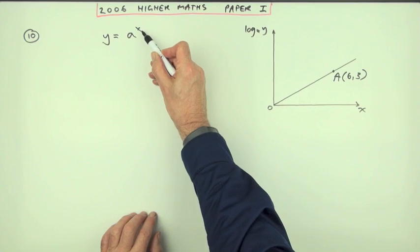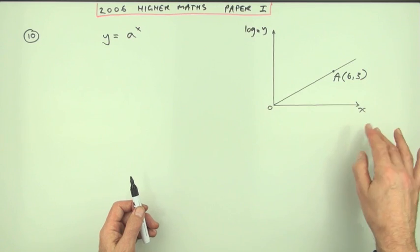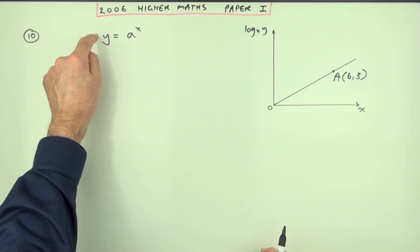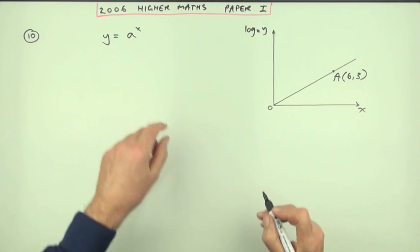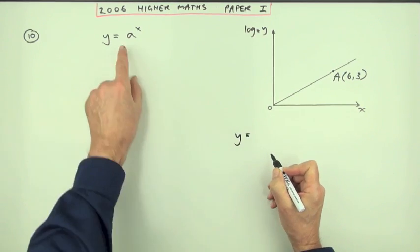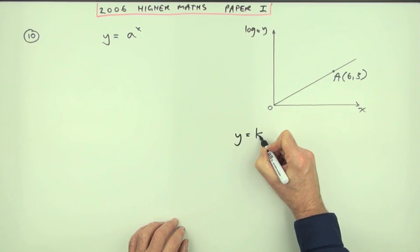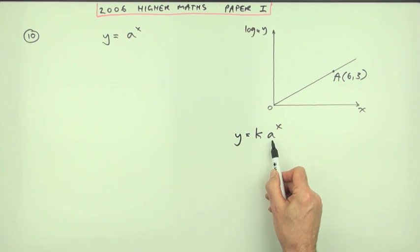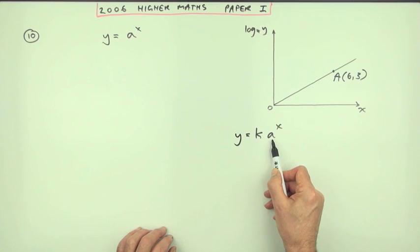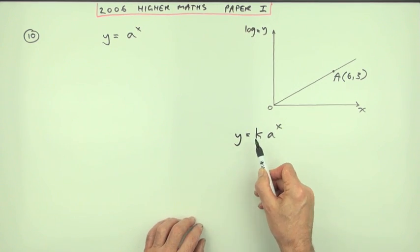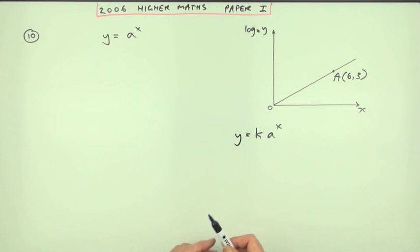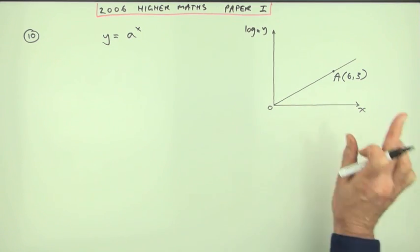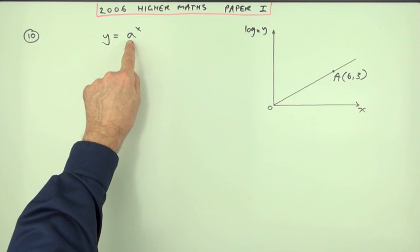X can take any values it likes, but once you've settled on a value of x, there's only one value of y that corresponds to it. You could have had a harder question with the general exponential equation, some multiple of a to the power x. Then you would have two unknown constants. To find two unknowns you would need two equations, so you'd need two pairs of values, two points.